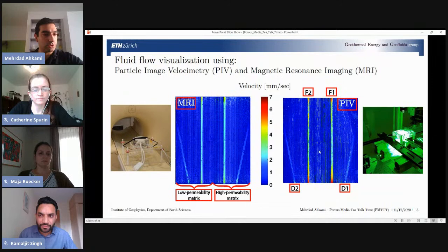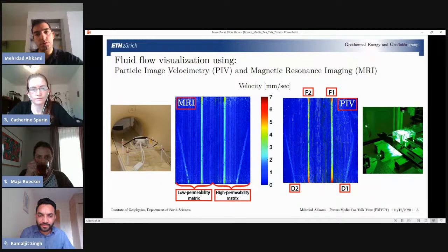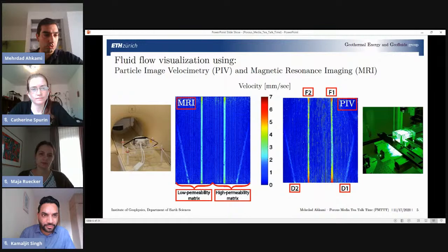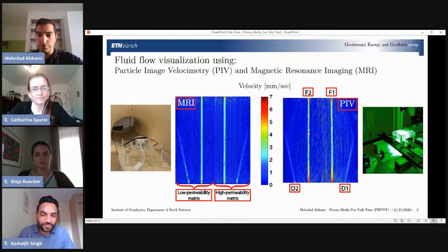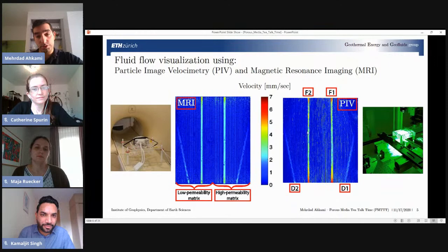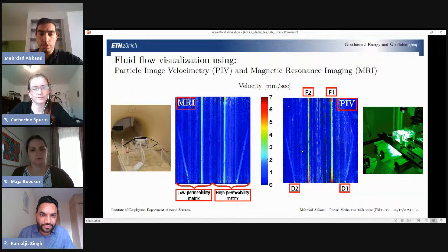Once we could manufacture our 3D printed fractured porous media, we conducted two sets of fluid flow visualization experiments, which are magnetic resonance imaging (MRI) and particle image velocimetry (PIV) experiments. As you can see, both of them are capable of visualizing fluid flow. As we expected, velocity is higher in fractures and especially in flow-through fractures. Both experiments are in good agreement, although there are some discrepancies in the higher velocity regions.